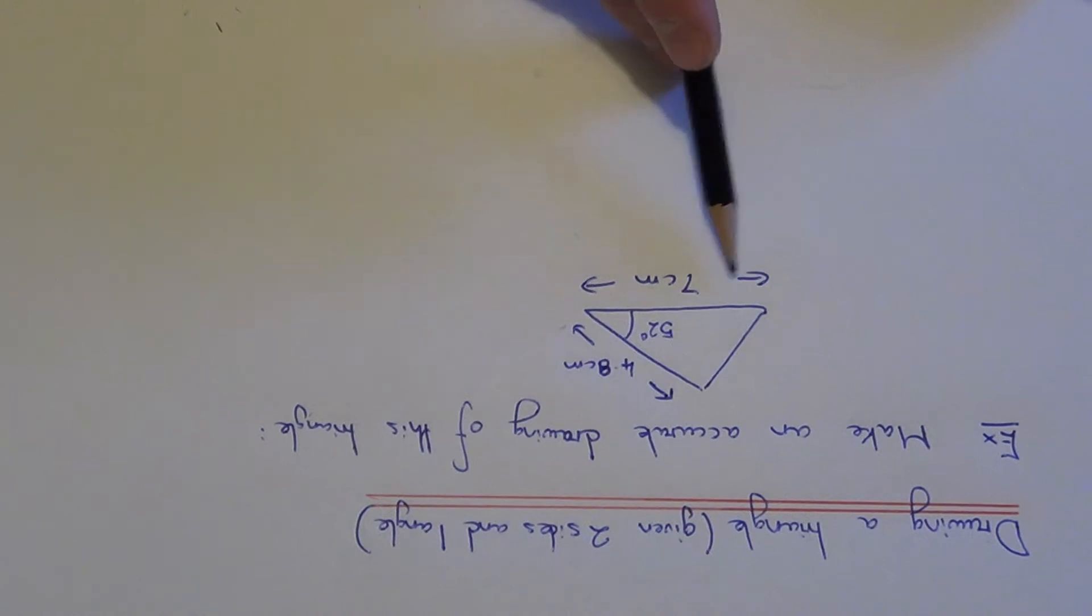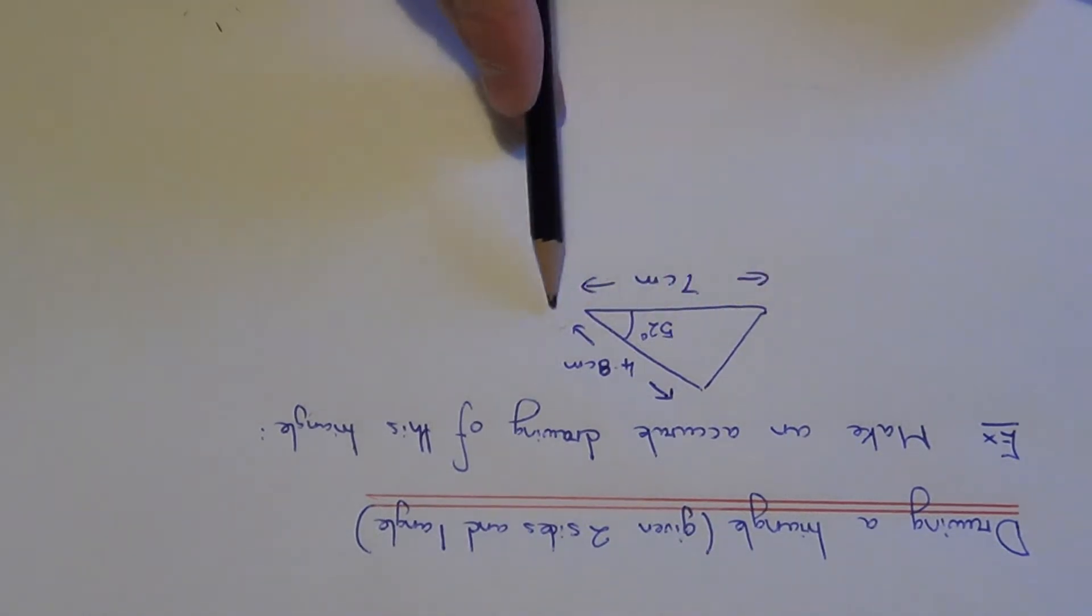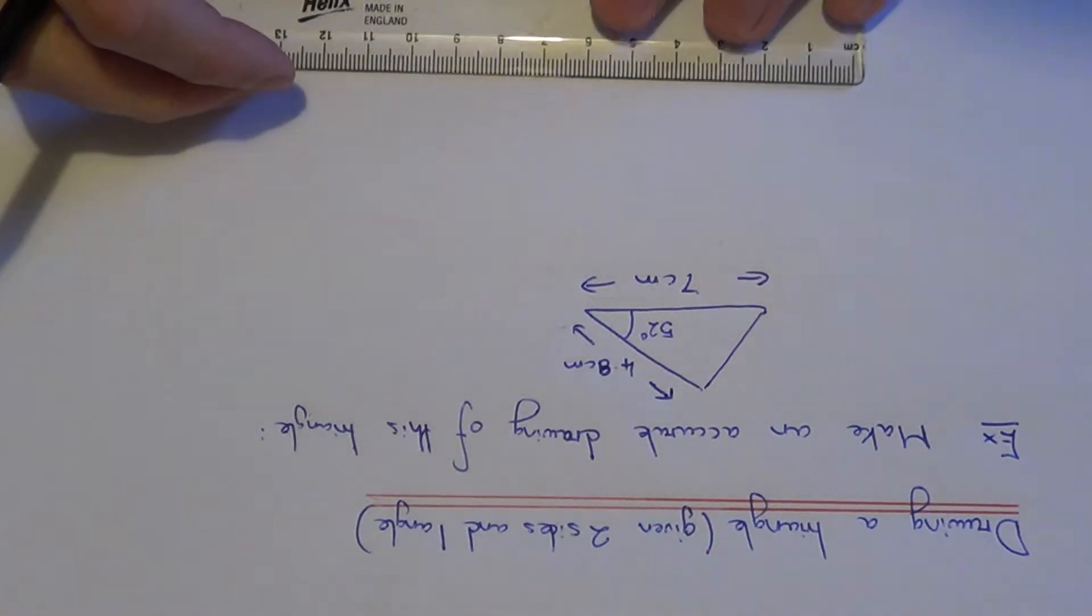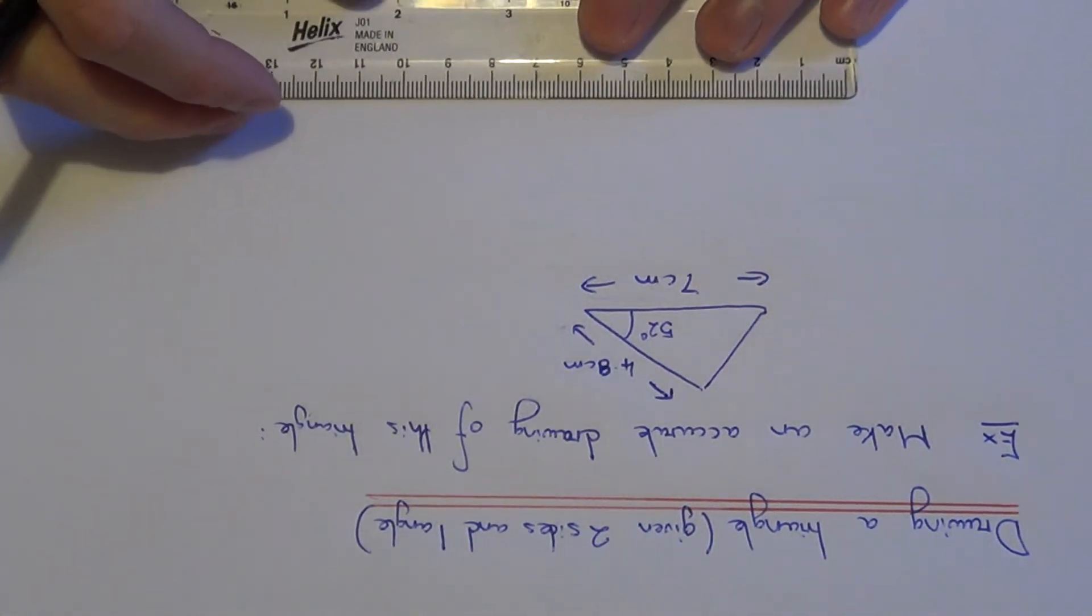First, draw the bottom edge of your triangle. You can see in the diagram this is 7cm, so draw a line 7cm long.